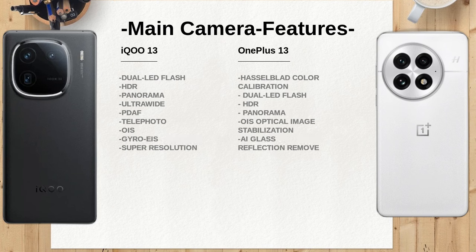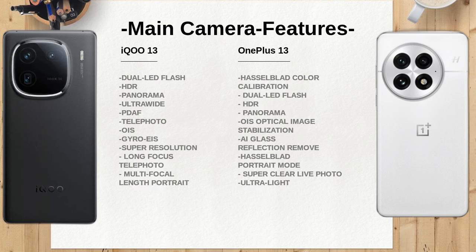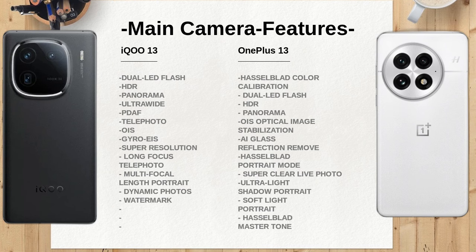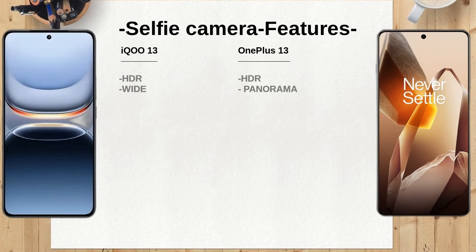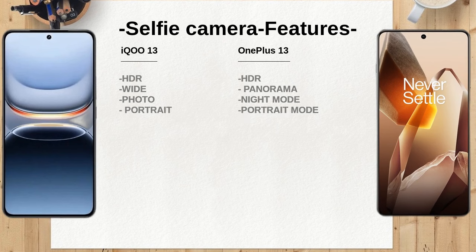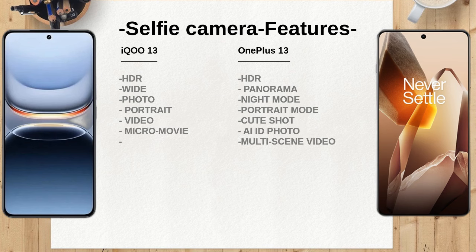The iQO13 offers HDR and various modes for capturing stunning selfies, while the OnePlus 13 enhances the experience with night mode and AI features for improved portrait shots. If you're a selfie enthusiast, the OnePlus 13 may provide more versatility in different lighting conditions. The iQO13 offers configurations with up to 1TB of storage and up to 16GB of RAM, while the OnePlus 13 also supports a maximum of 1TB but can go up to an impressive 24GB of RAM, making it a powerhouse for multitasking and gaming.